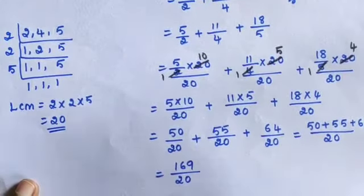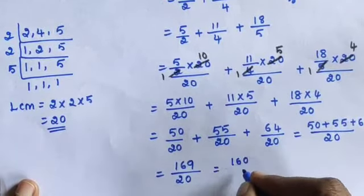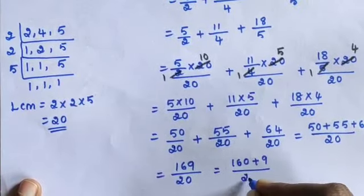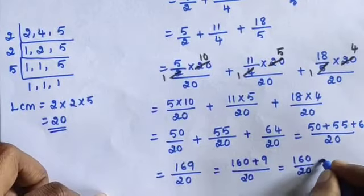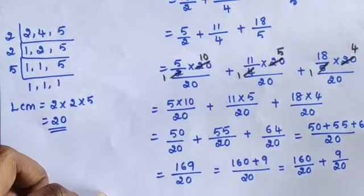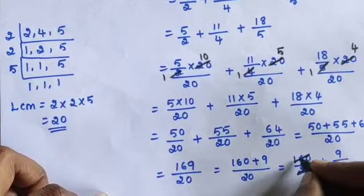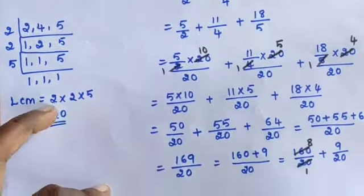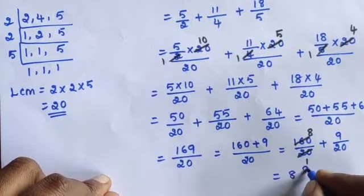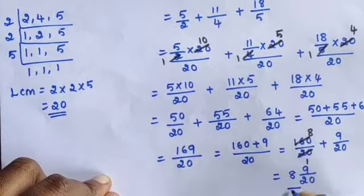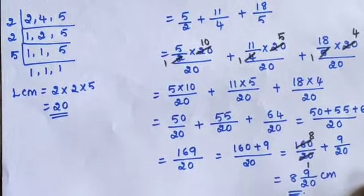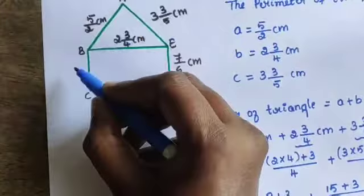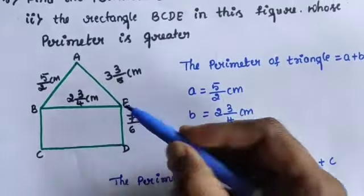169/20 is an improper fraction. Convert to mixed fraction: 169 = 160 + 9, so 160/20 + 9/20. Since 8 × 20 = 160, the answer is 8 9/20 cm. This is the perimeter of triangle ABE.